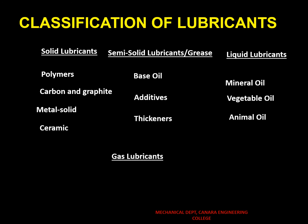Gas lubricants: gases like nitrogen and helium are used as lubricants in applications where film thickness between the tribo pair is ultra small. The advantages of using gas lubricants are a large temperature range, no sealing required for lubrication, very low friction due to low viscosity, no vaporization, no solidification, and no decomposition.